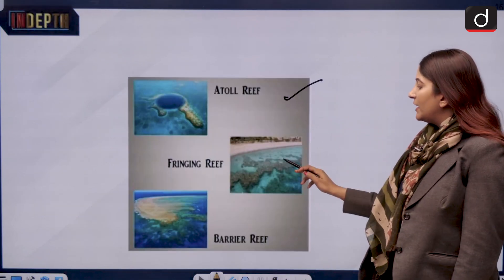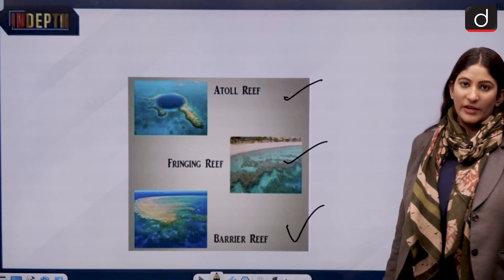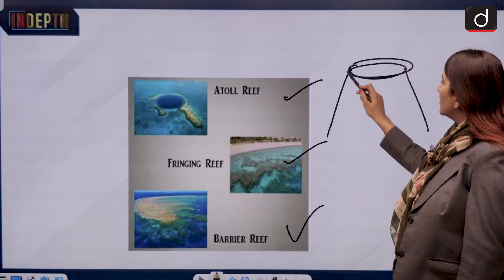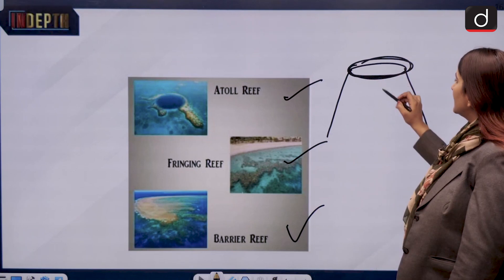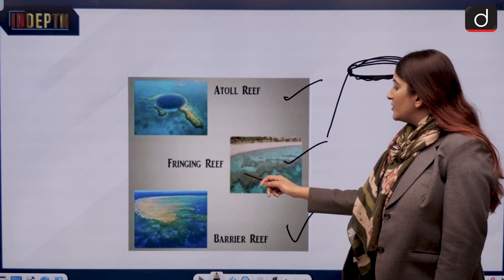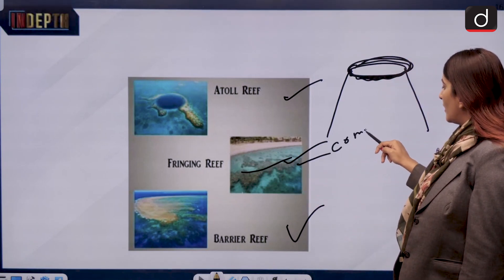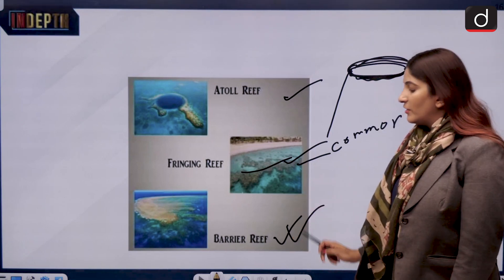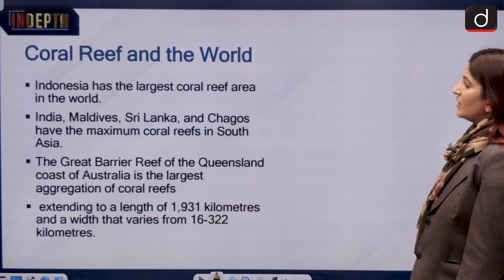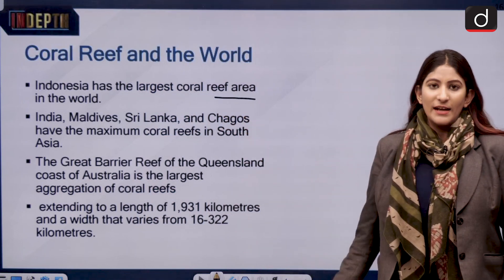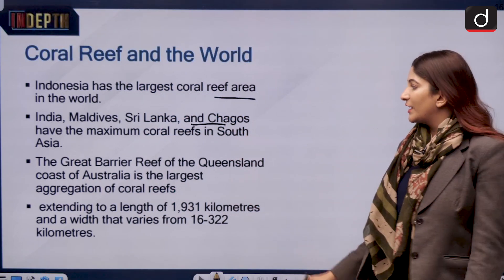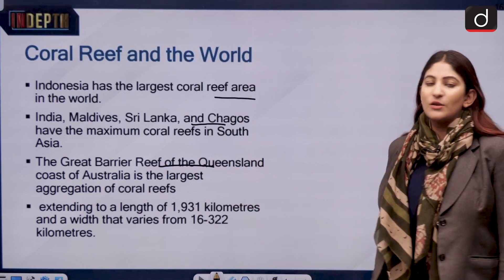There are three types of reefs: atoll reef, fringing reef, and barrier reef. Atoll reefs form at the mouth of submerged volcanoes. Fringing reef is the most common type. Barrier reefs form along shorelines, such as the Great Barrier Reef of Australia. Indonesia has the largest coral reef area in the world, while India, Maldives, Sri Lanka, and Chagos have the most in South Asia.